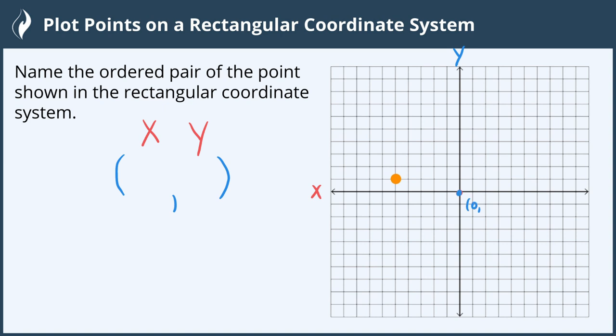The origin is labeled with the ordered pair and we can see our point is moving to the left of the origin first, because we do the x coordinate first, and we need to move one, two, three, four, five units to the left. This means it went in the negative direction, so our x coordinate is negative five.